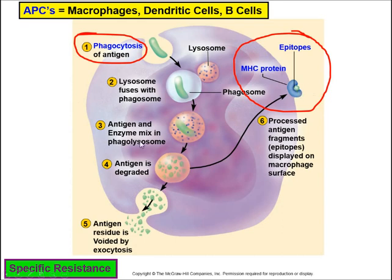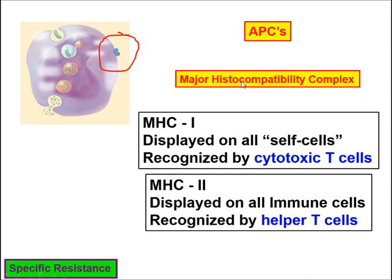The APC presents the epitope on an MHC — major histocompatibility complex. There are two different types of MHCs. MHC1 is displayed on self-cells — meaning all of my cells, all of your cells, everybody's cells. So if a liver cell is displaying an epitope, it's in an MHC1 complex. MHC1 can only be recognized by what we call cytotoxic T cells, and you'll learn more about those very shortly.